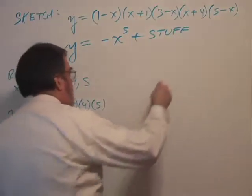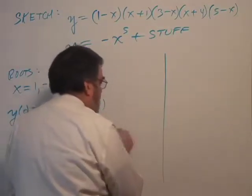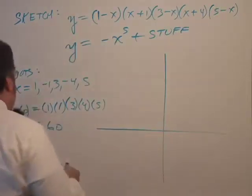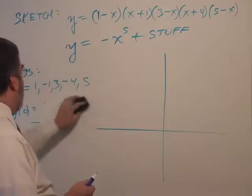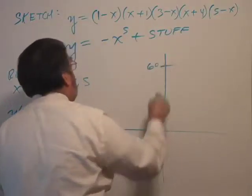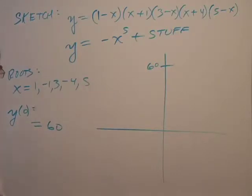Okay. All right. So, I'm going to make a little room here. So, my y-intercept is at 60. So, let's just go ahead and put that in. 60 is up there, isn't it? I think it is. All right.